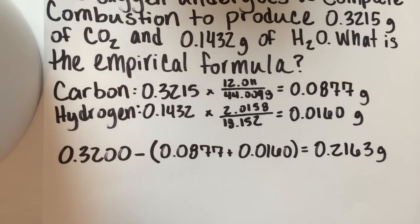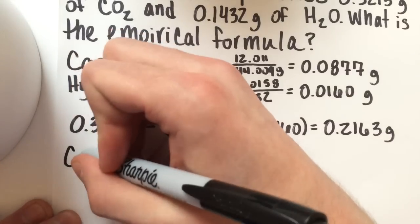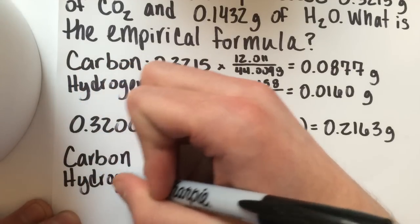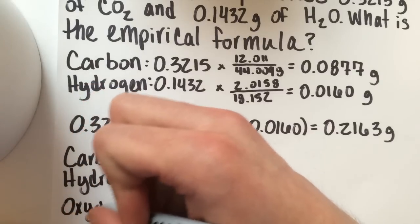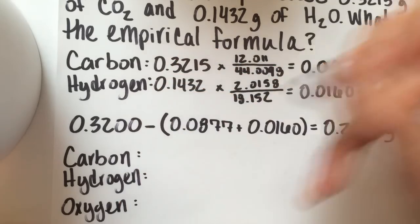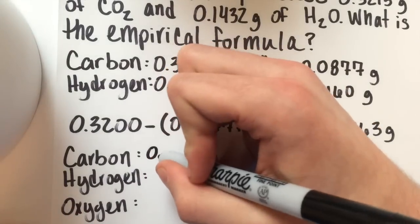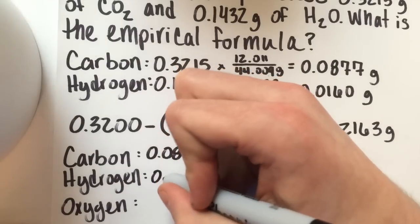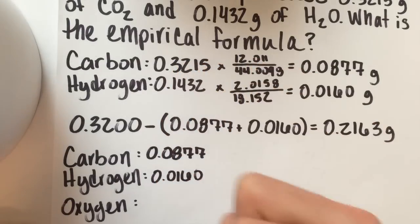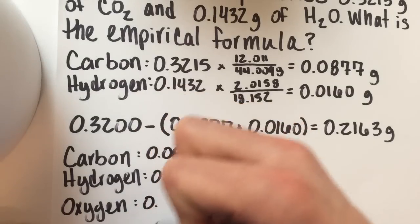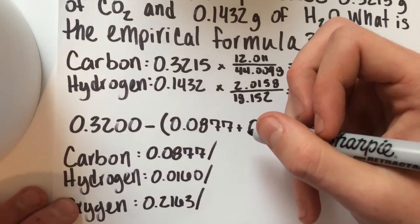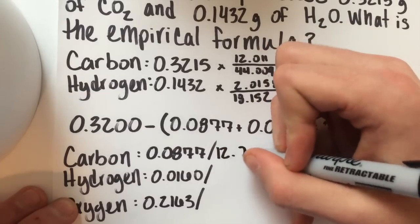Step three is to convert grams of carbon, hydrogen and oxygen to moles. So we have carbon, hydrogen and oxygen. We take the values we just got. So 0.0877, hydrogen is 0.0160 and oxygen is 0.2163.